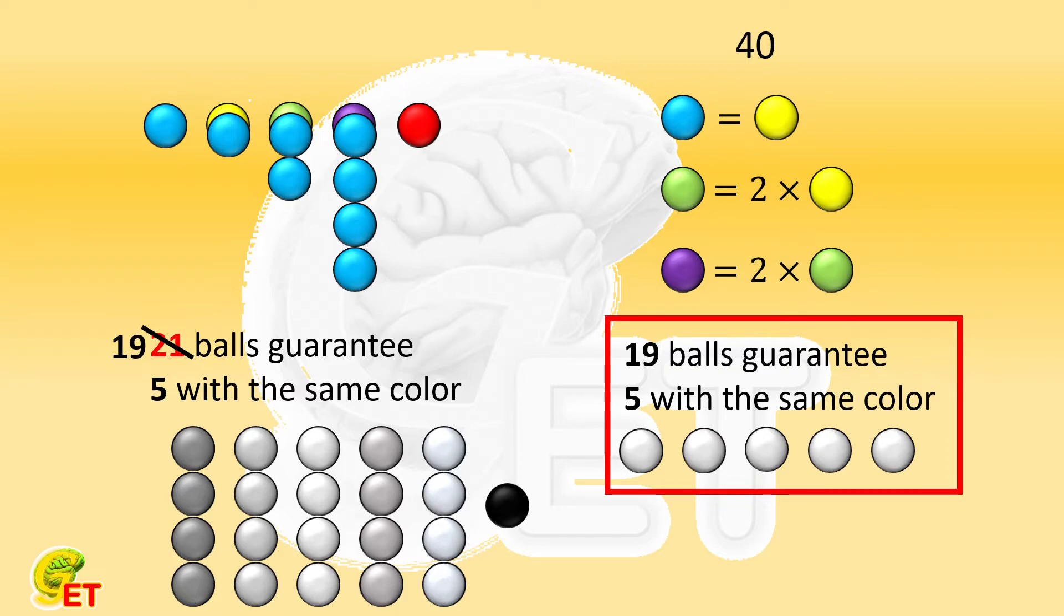There are two cases which can fulfill the conditions. The first is that the color with the smallest number has only 2 balls. Or two colors equally have the smallest numbers of balls, and there are both 3.